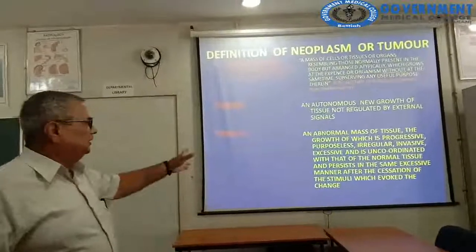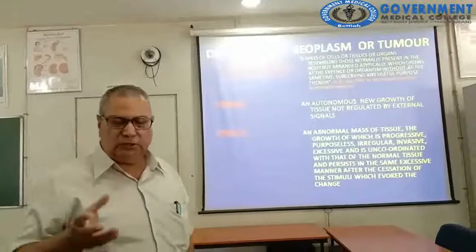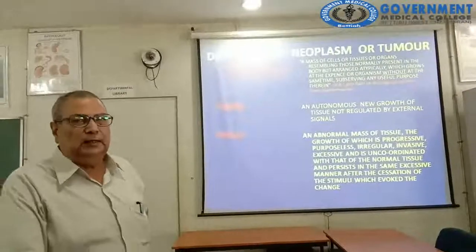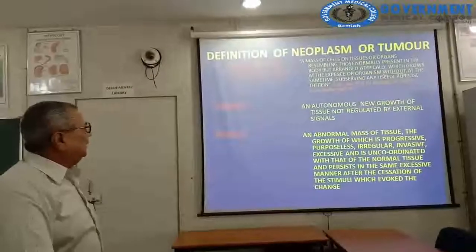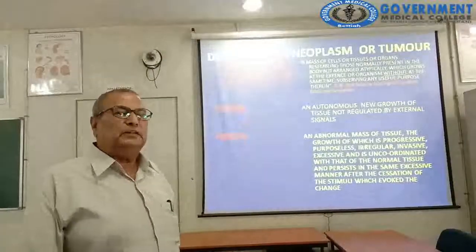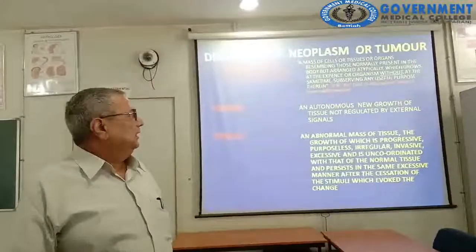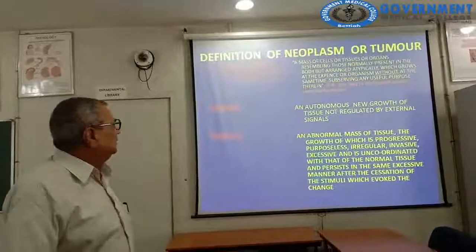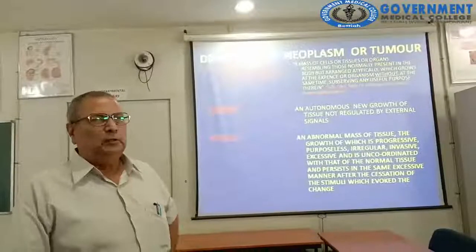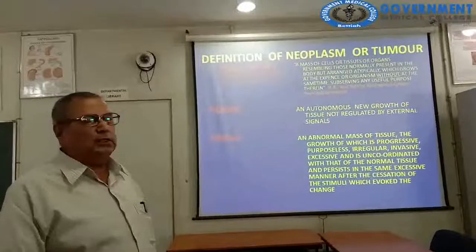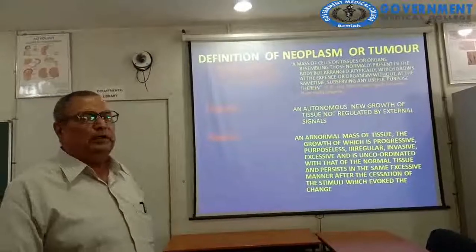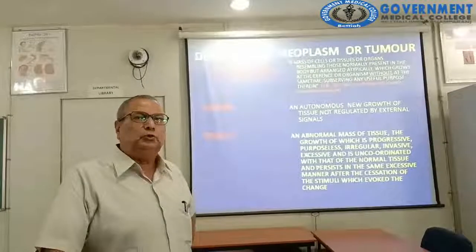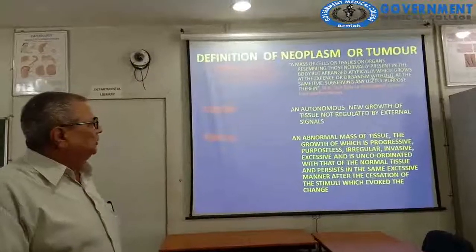The definition of neoplasm — the most important is Willis's definition, which you need to know for university examinations. Two other definitions also exist: Powell's and Ewing's. Powell's definition: a mass of cell, tissue, or organs resembling those normally present in the body but arranged atypically, which grows at the expense of the organism without serving any useful function. However, Powell's definition fails to distinguish tumour from malformation.